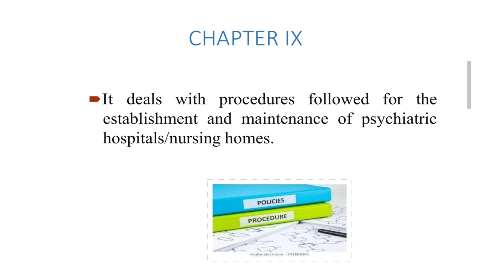Chapter 9 deals with procedures followed for the establishment and maintenance of psychiatric hospitals and psychiatric nursing homes. It outlines the basic guidelines, norms, rules, and regulations required to start and maintain a psychiatric hospital or nursing home. Since many private psychiatric hospitals and nursing homes exist, there must be statutory guidelines in order to run and maintain them.